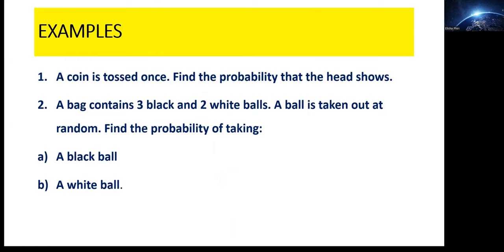Let's look at the first example. A coin is tossed once. We have to envision what a coin looks like — a coin has two faces: we have the top face which may be a tail, and the head on the other side. They're saying: find the probability that the head shows.